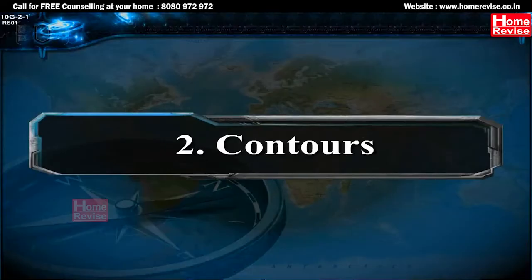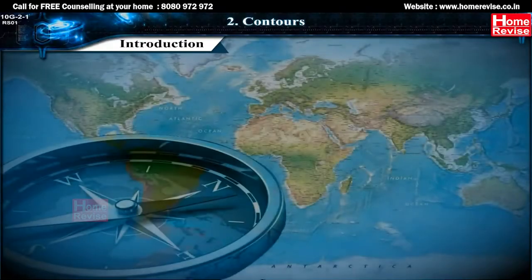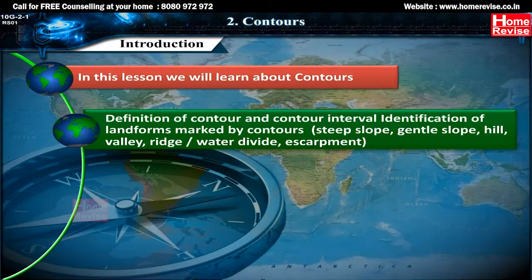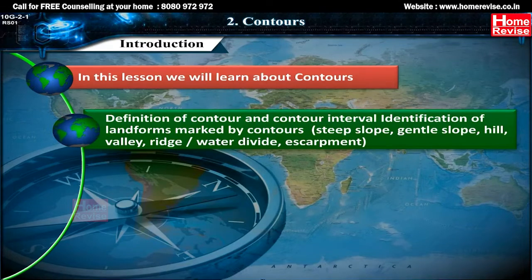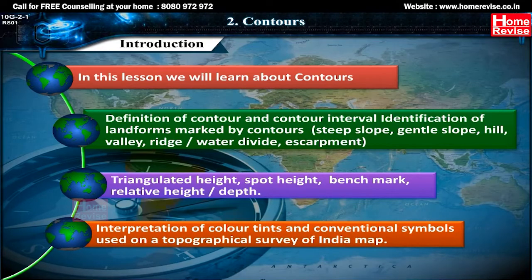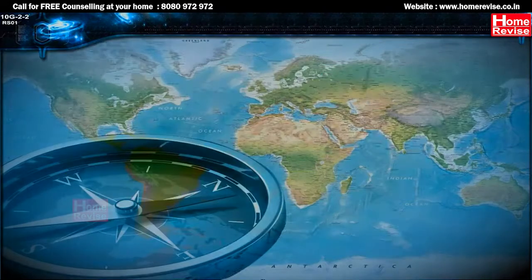Chapter 2: Contours. In this lesson we will learn about contours — definition of contour and contour interval, identification of landforms marked by contours: steep slope, gentle slope, hill, valley, ridge or water divide, escarpment, triangulated height, spot height, benchmark, relative height or depth, and interpretation of color tints and conventional symbols used on a Topographical Survey of India map.